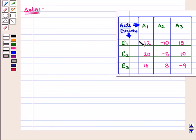In this question a table is given to us that shows payoff of three acts A1, A2 and A3 and their events E1, E2 and E3.